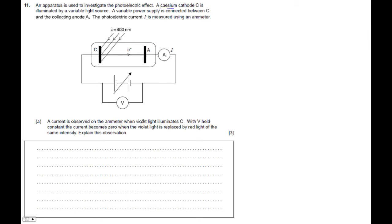A current is observed when violet light illuminates C. With V held constant, the current becomes zero when the violet light is replaced by red light of the same intensity. Explain this observation.